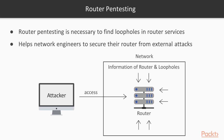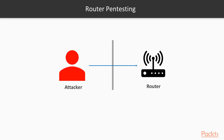An external attacker tries to connect with and access your router services. In pen testing, we consider ourselves as the attacker — the attacker is trying to get information about the router. The router has different kinds of services like SSH and SNMP running inside it. The attacker's goal is to get information about all the services running inside the router and perform a brute force attack on those services.